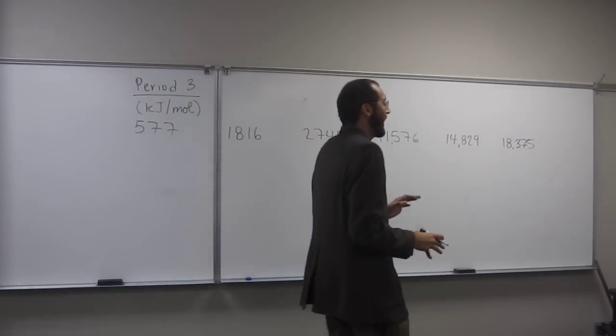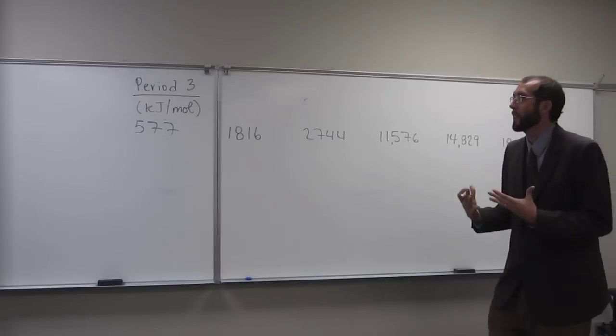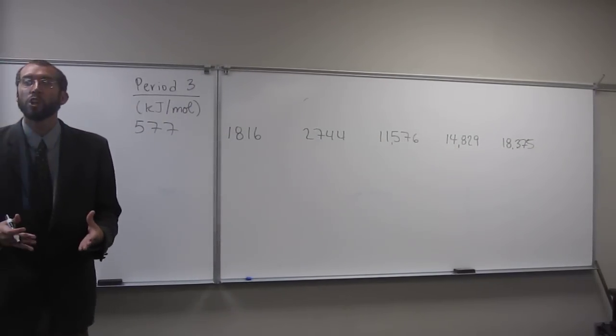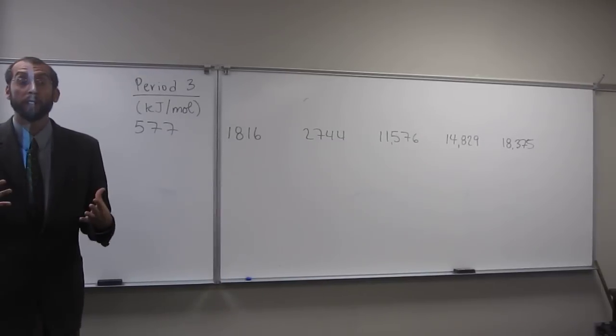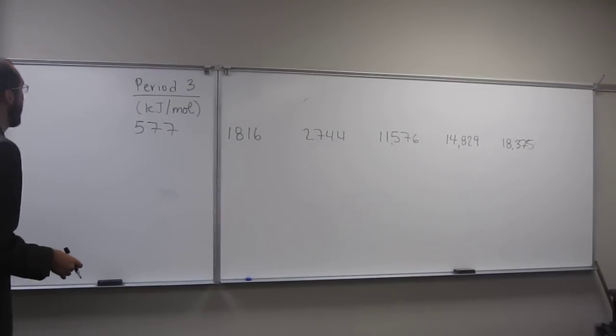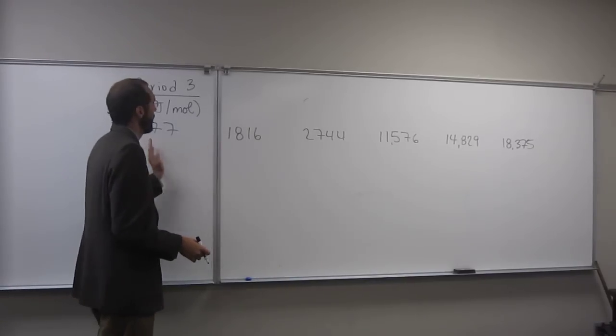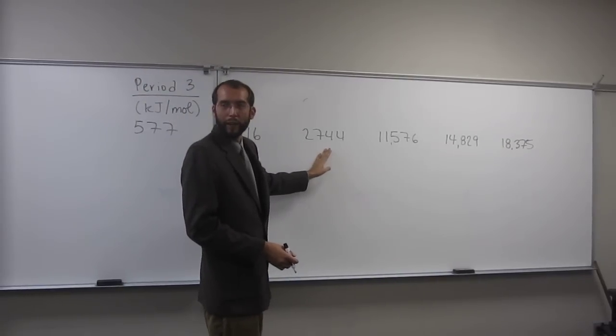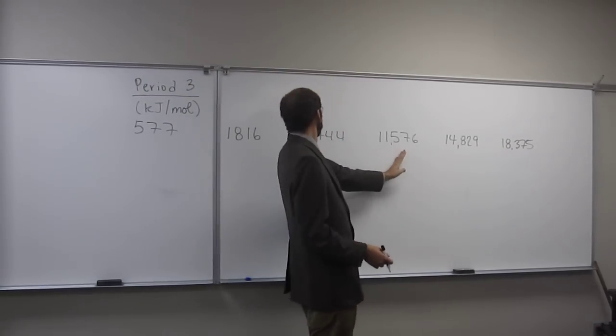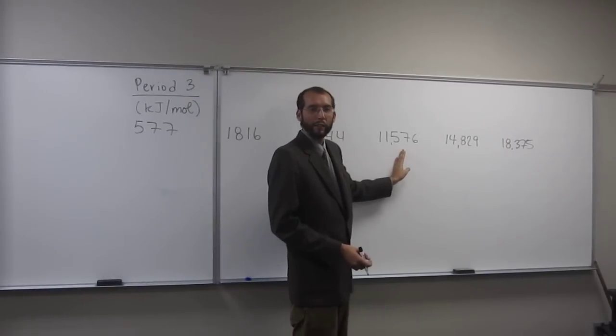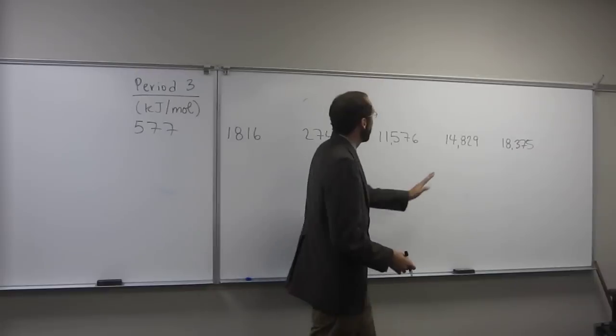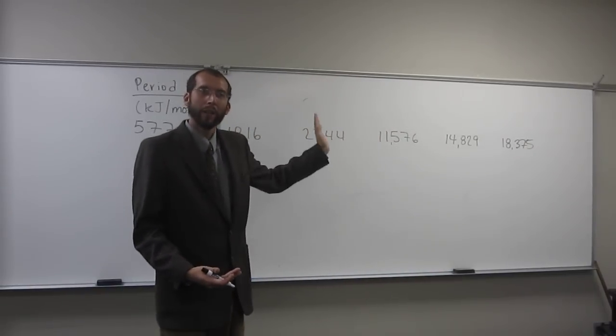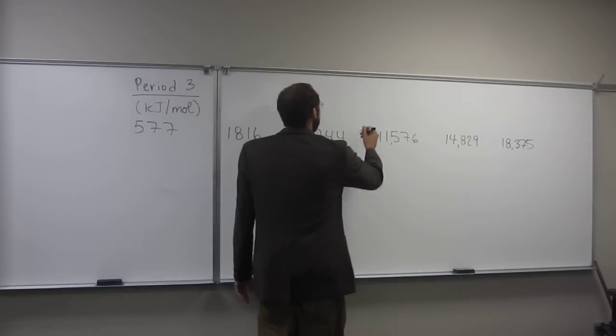So remember, when we're identifying elements by successive ionization energies, we got to first figure out where the big jump is. And we're going to figure that out qualitatively. We're going to say, okay, well, that seems like a big jump, but like 1,000. But that's also about 1,000 too. But then when we get here, that's like 8,000, right? And then we're to 4,000, and then 4,000. So the big jump is that 8,000. So we'll just draw a line through there.